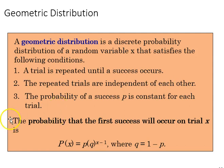The probability that the first success will occur on trial X is found through this equation: probability of X equals P times Q to the X minus one, where Q equals one minus P, the complement of P.